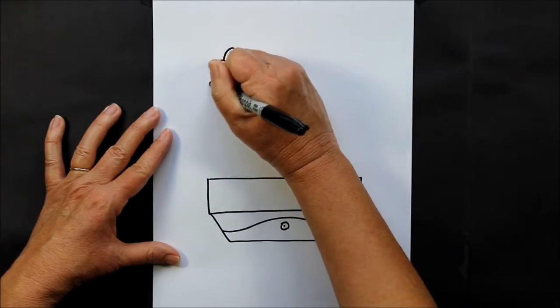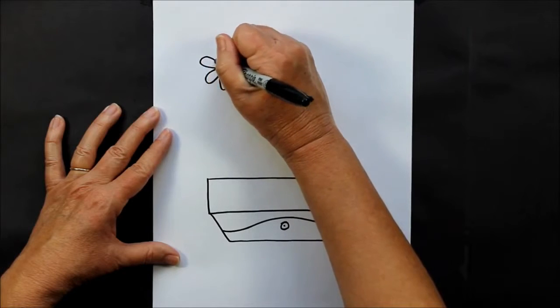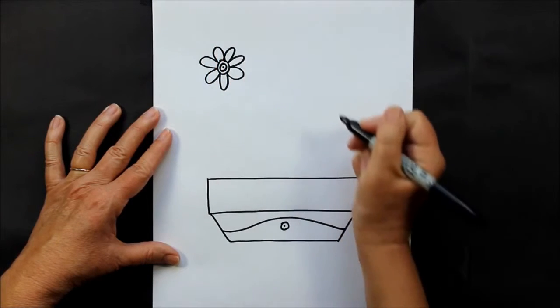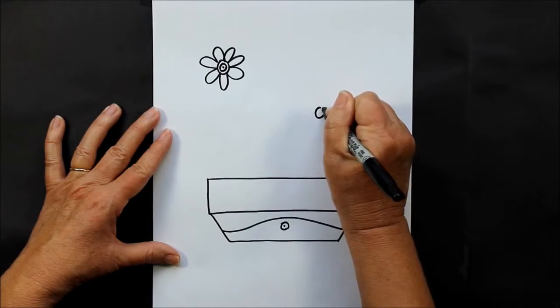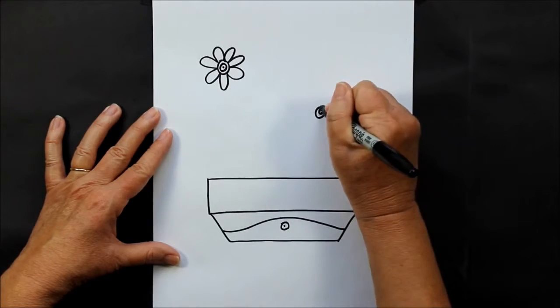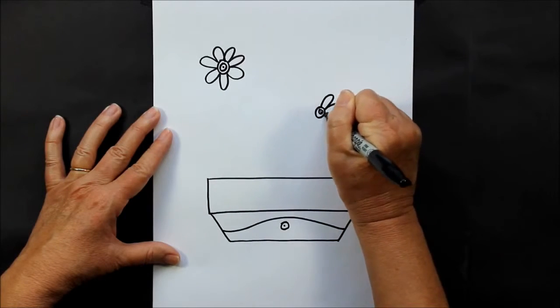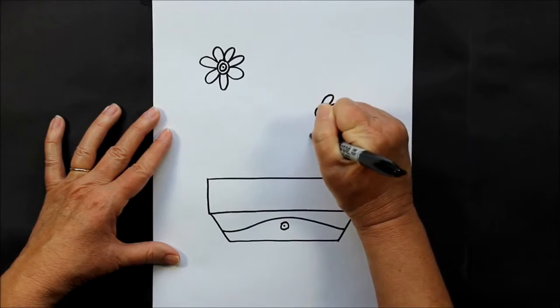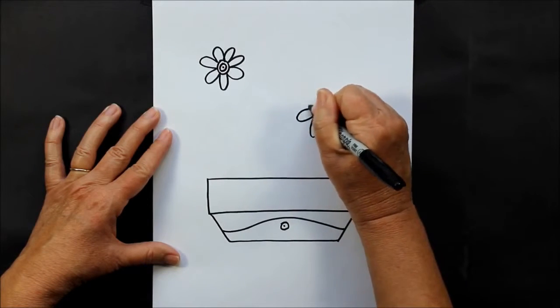And then maybe one here. They almost look like daisies. So you're doing circle, circle, dot with some petals around.